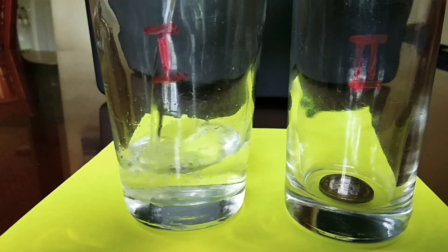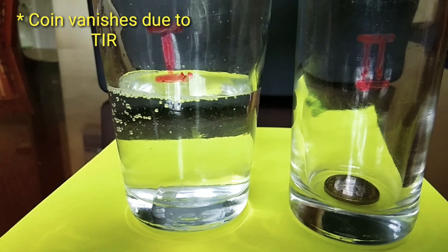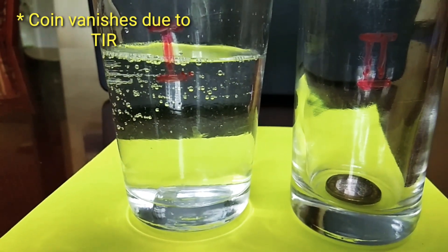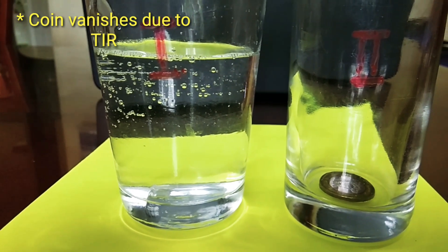So we are pouring water into glass number one. See the coin has disappeared. The coin has disappeared in glass number one. It's because of total internal reflection.